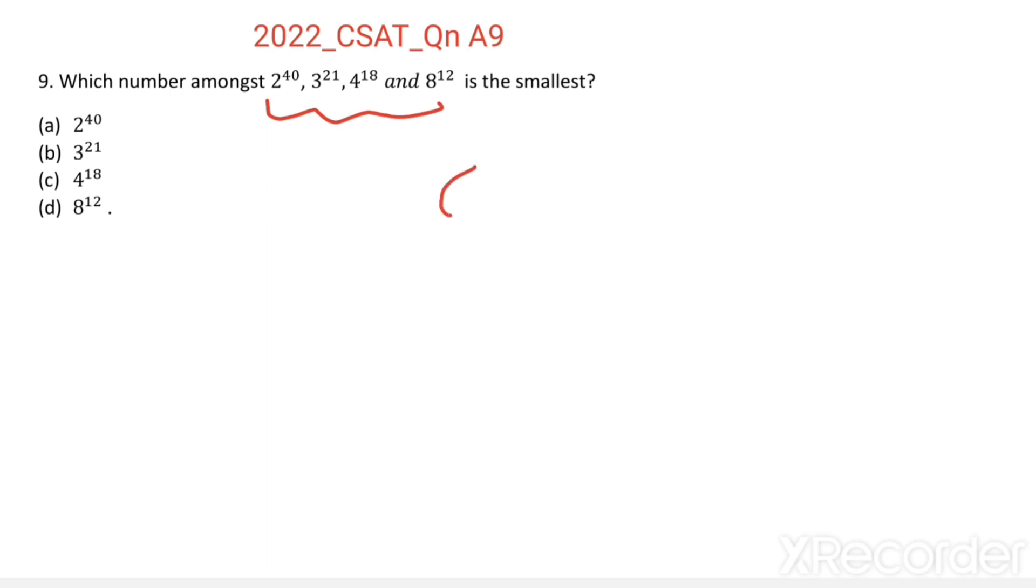Before solving this question, we need to know a power m all power n equals a power m into n. Then 8 power 12 equals... 8 we can write as 2 cube. 2 cube all power 12, this is equal to 2 power 3 into 12, we get 2 power 36.